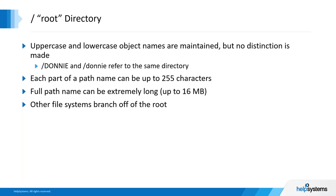The Unix rules apply but with differences — upper and lowercase characters are maintained, but unlike Unix, they don't mean different things. So slash Donny all capitals and slash Donny lowercase are the same thing. Each path name can be made meaningful, up to 255 characters. Fun fact: a full path name can be as much as 16 million plus bytes in size, with all the paths that have been addressed before branching off the root.